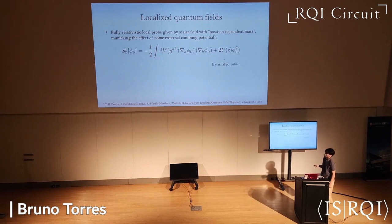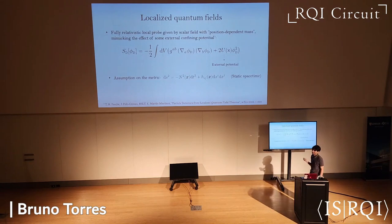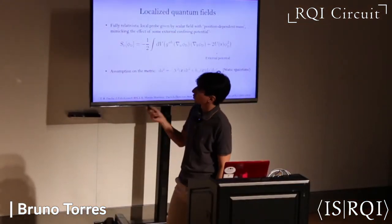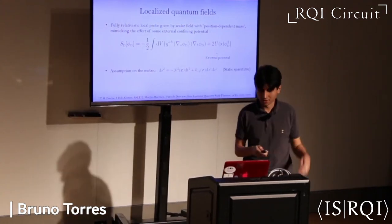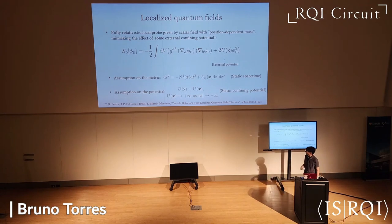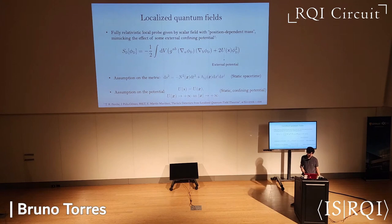I'm going to require two things. I'll assume the metric is static — or more precisely, that there exists a timelike Killing vector field orthogonal to a family of Cauchy hypersurfaces — and I write the metric in coordinates naturally adapted to that Killing isometry. I also assume the potential in those coordinates doesn't depend on time, so it's invariant under the flow of the timelike isometry, and it is confining: there's some finite region where the potential takes a minimum, and as you go further away the potential grows to infinity.